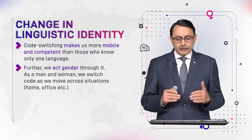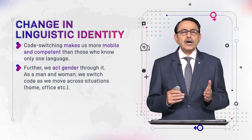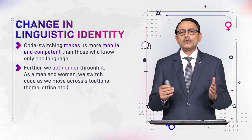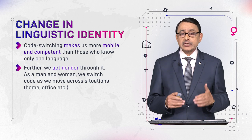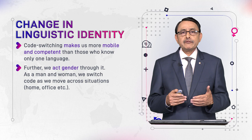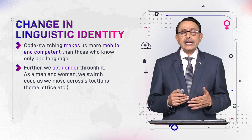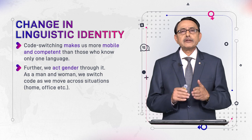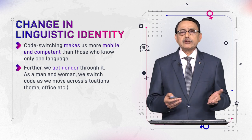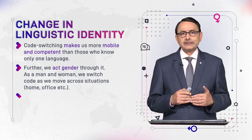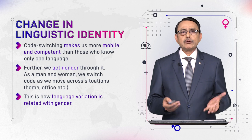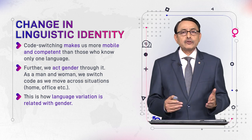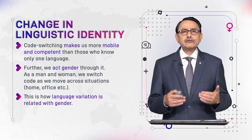We also act out gender through our use of language. As men and women, we switch code as we move through different situations. This is code switching where we in fact perform our gender. As men and women, we move to different contexts, talk with different people, and accordingly switch from one variety to another. Our choice of variety — our choice of language — shows who we are, whether we are a man or a woman. This is how gender is expressed through bilingualism or code switching.